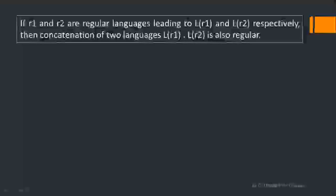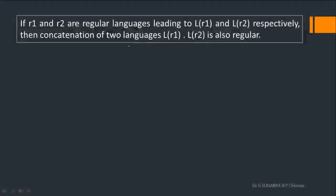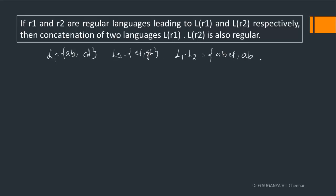The second operation is concatenation of two regular languages. Given two languages L of R1 and L of R2, we are going to test whether L of R1 dot L of R2 is regular or not. Concatenation means writing the strings of the second language after the strings of the first language. For example, if L1 equals {AB, CD} and L2 equals {EF, GH}, then L1 dot L2 gives: ABEF, ABGH, CDEF, and CDGH.